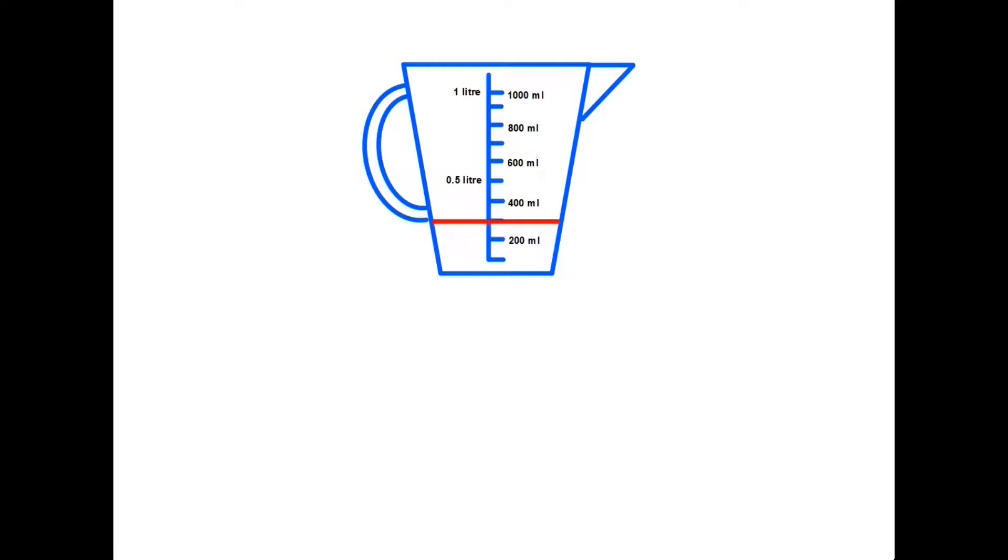You may need to be a little bit more careful if the level was somewhere like here, because of course now it is between two and three hundred, therefore it would be two hundred and fifty milliliters. We can see on the scale here that one thousand milliliters is a liter, therefore a half a liter would be five hundred milliliters.